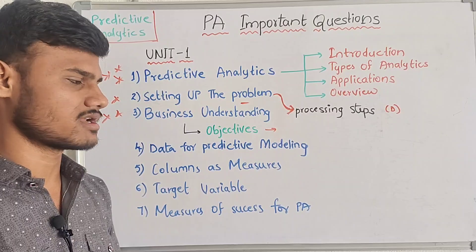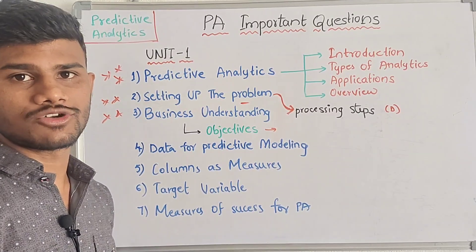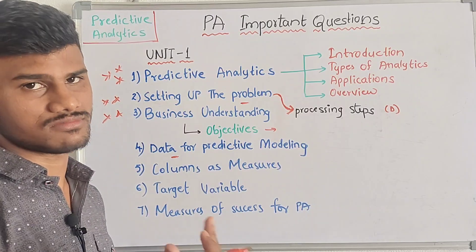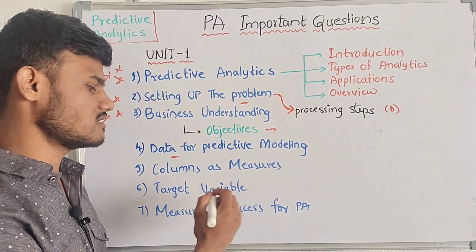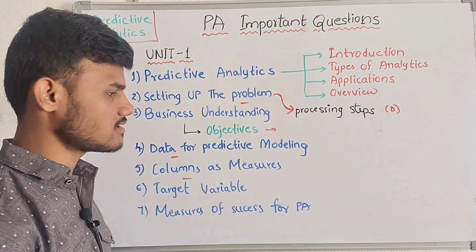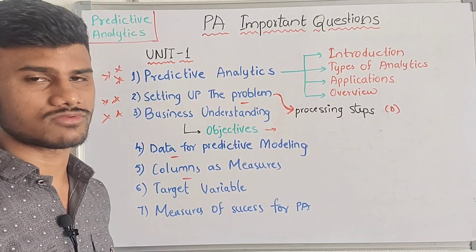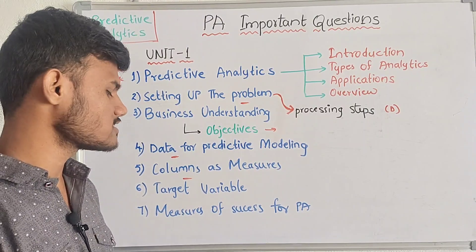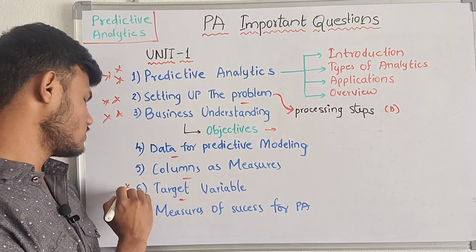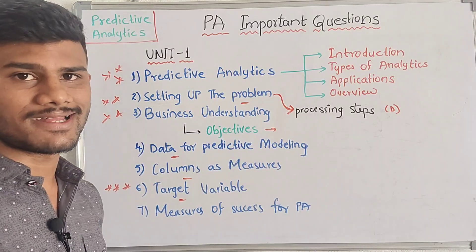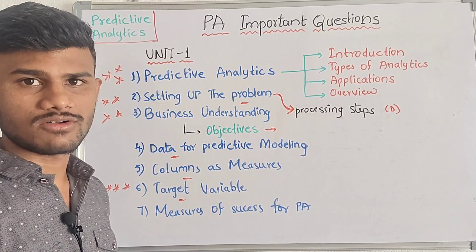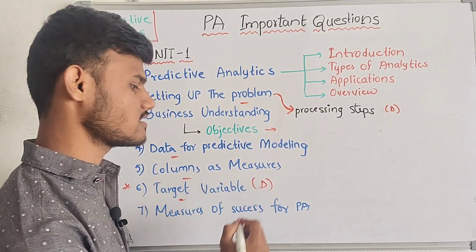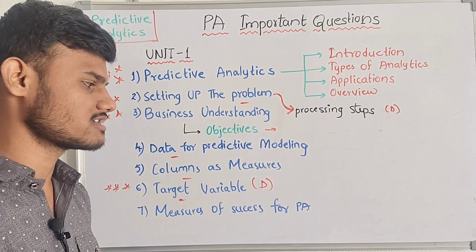Next is data for predictive modeling — how we use predictive modeling. There are some sub-headings and some theory. This covers 2-mark and 5-mark questions. Then, target variable — defining a target variable is also an important question. You can use the steps to draw and explain it better.